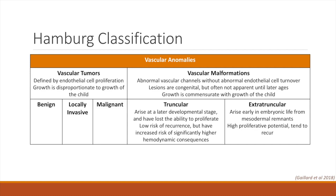There is an additional classification system that is commonly used. The Hamburg classification system arose in 1992 and further classifies vascular malformations based on their embryologic development. In this classification system, vascular malformations can be classified as truncular or extratruncular. Truncular vascular malformations are thought to arise at a later embryologic stage when cells have lost some of their proliferative ability. Because of this, these lesions have a lower risk of recurrence, but because they affect vascular trunks, they have increased hemodynamic consequences.